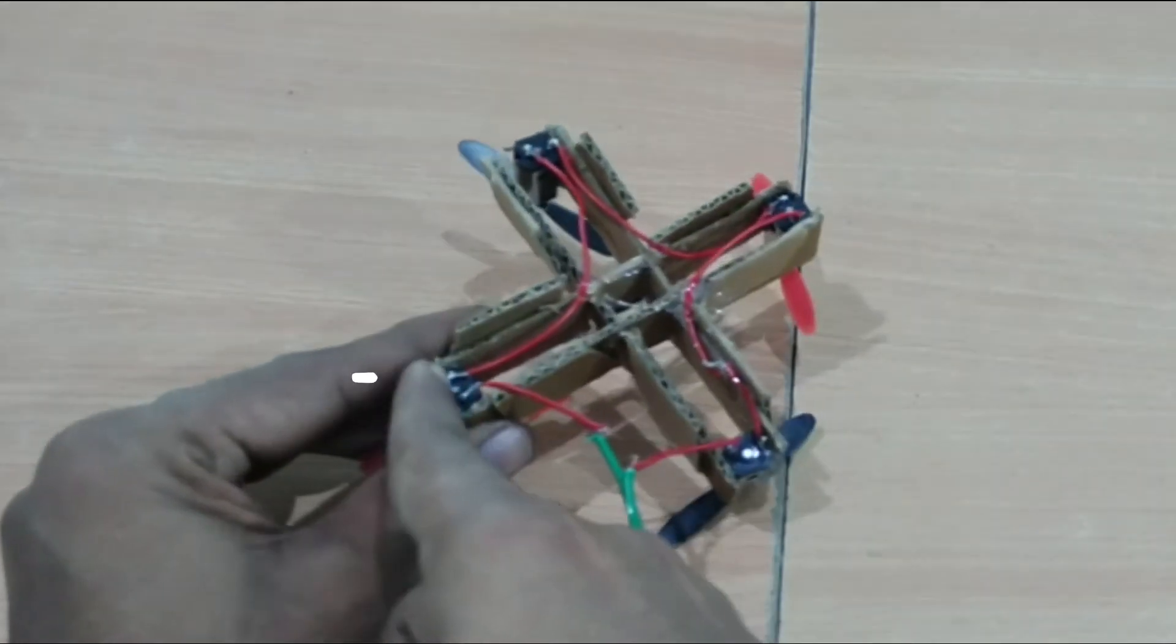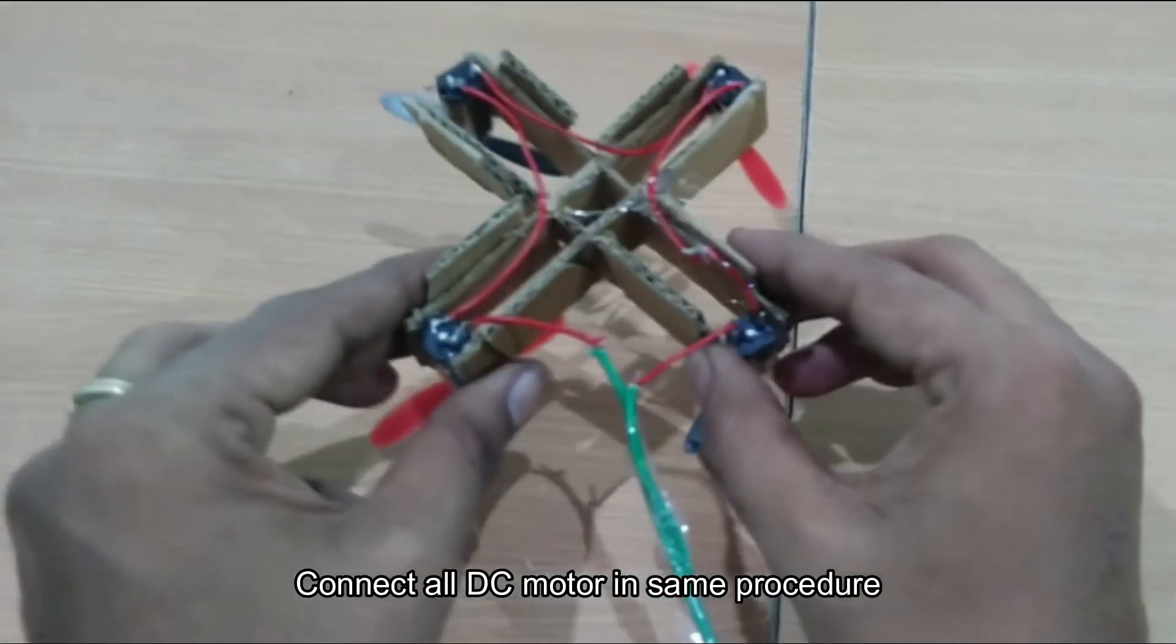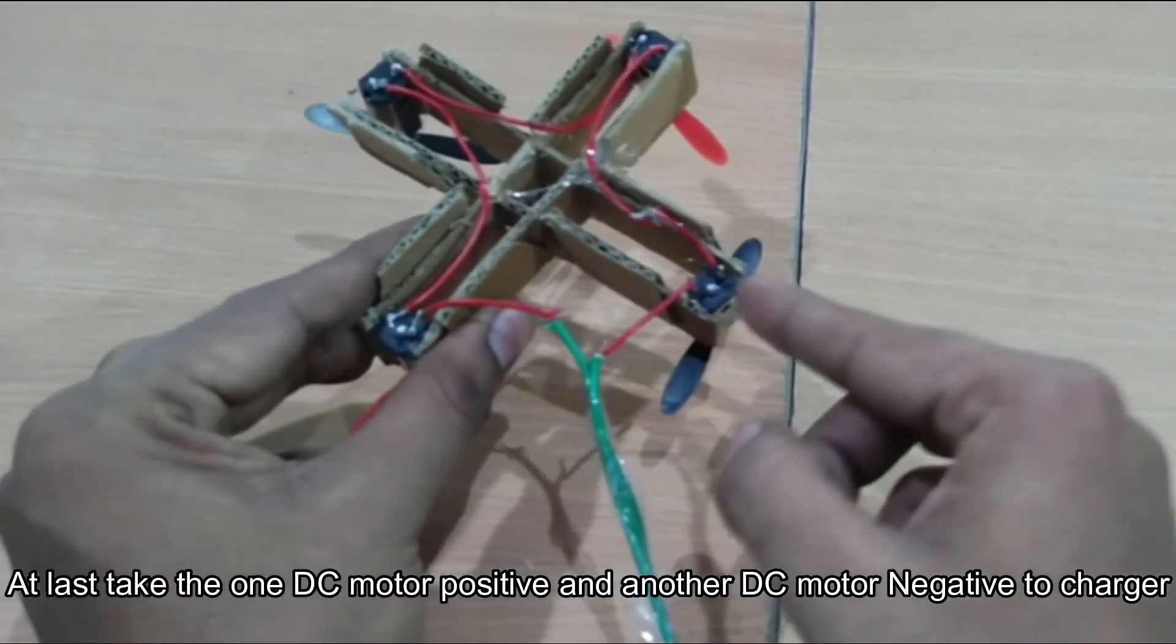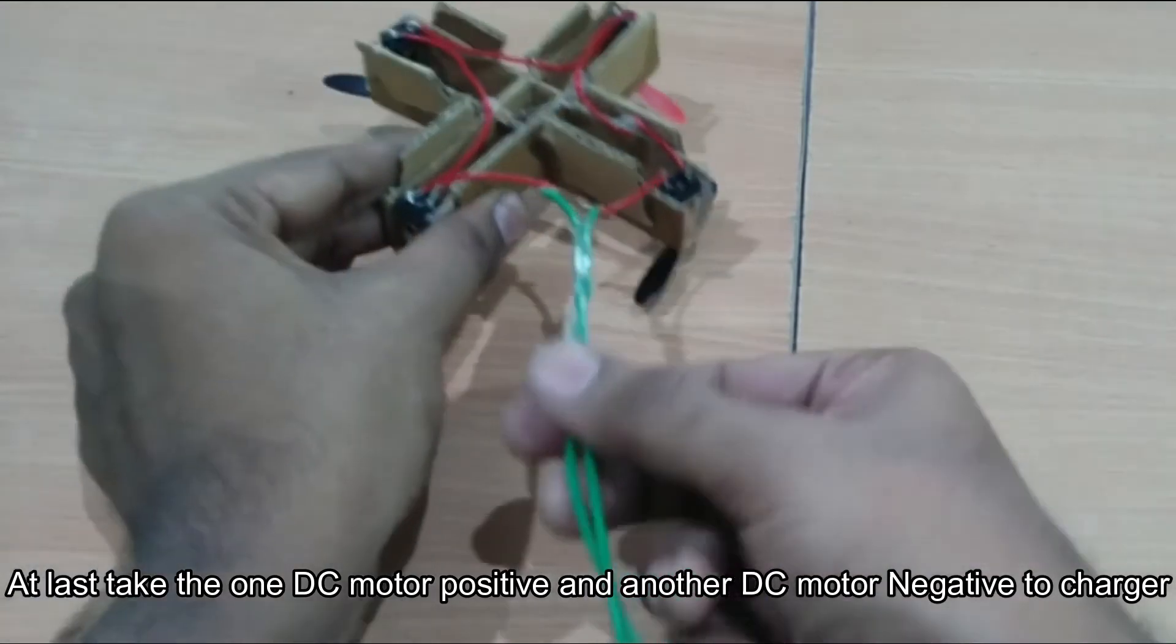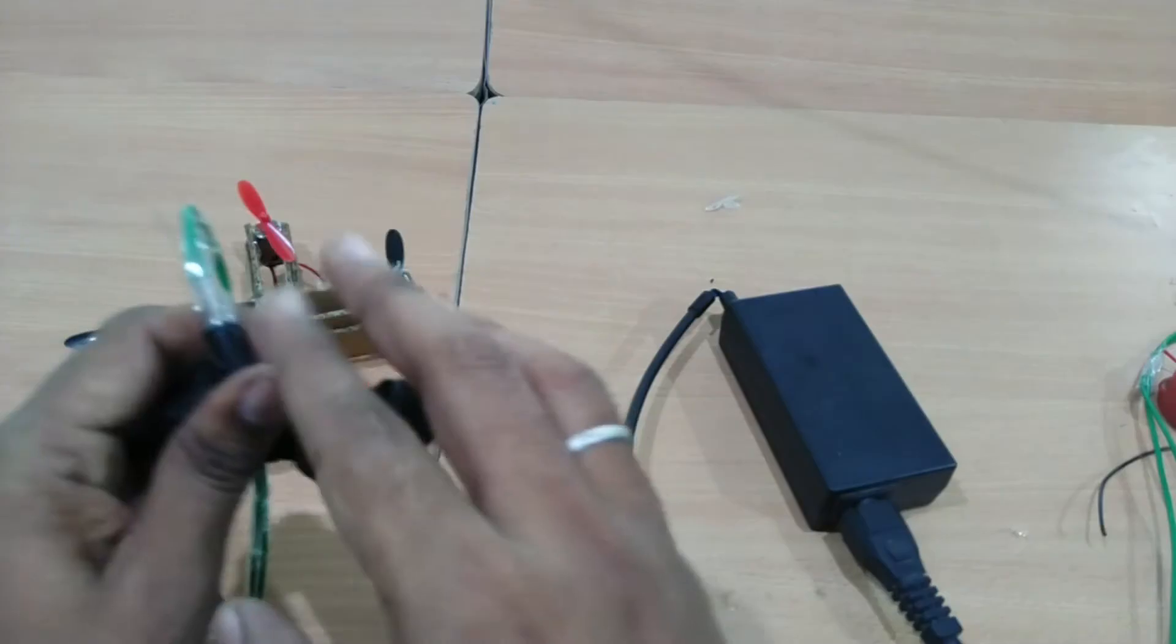You can attach the negative and negative. You can attach the DC motor to the bottom. You can attach the positive and negative. If you have sent it, you will connect the parts.